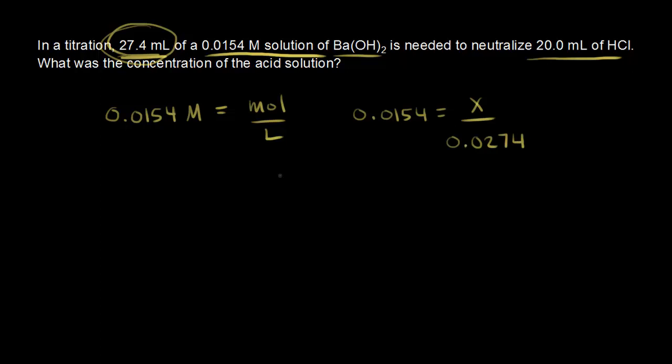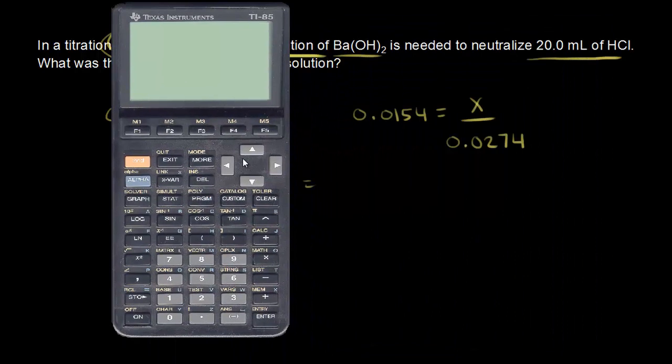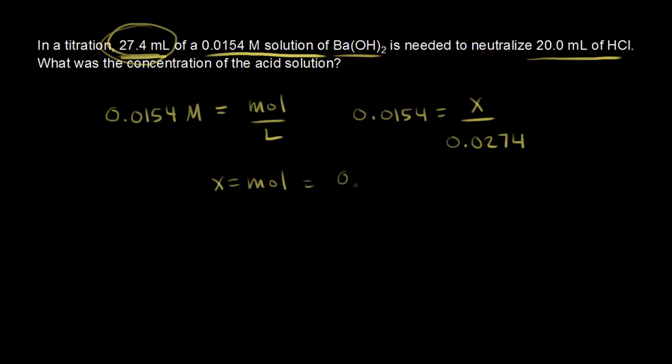We solve for X. And X, of course, represents the moles of barium hydroxide. So let's get out the calculator here. So we take 0.0154 and we multiply that by 0.0274. And that gives us 4.22 times 10 to the negative fourth. So that's equal to 0.000422 moles of barium hydroxide.